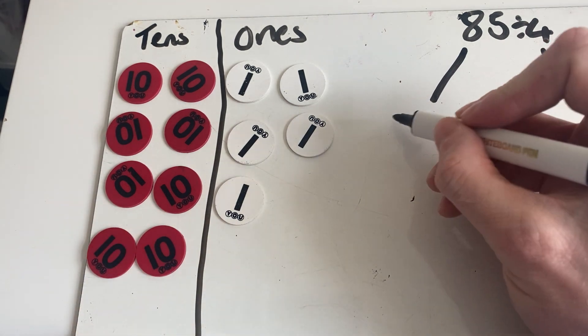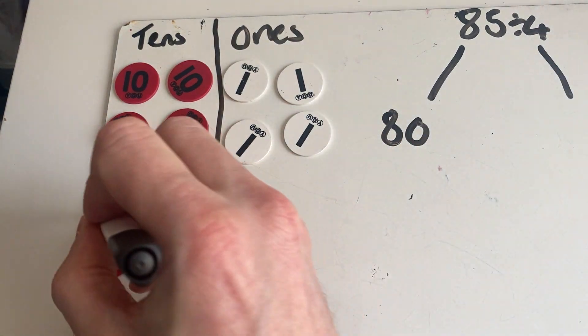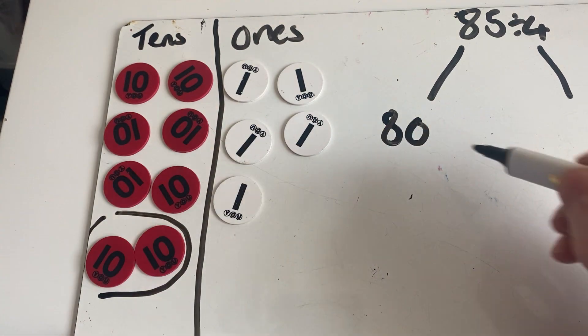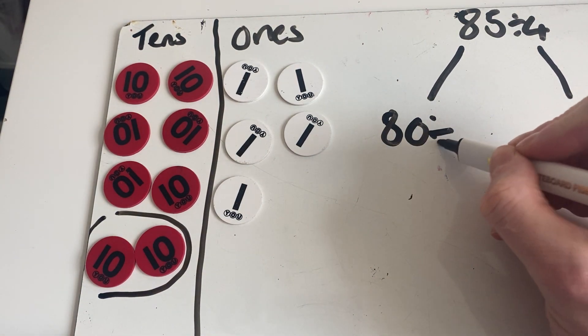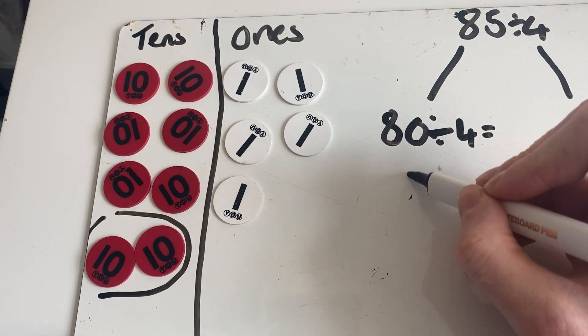We can see we've got four groups here - one, two, three, four - and they've each got the same amount. They've got two in each group, so we know that 80 divided by four equals 20.